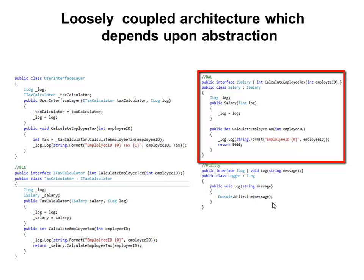The Salary class implements the interface iSalary. Since the Salary class has a dependency on the Logger class, we created a constructor which takes in a logger as a dependency. The constructor takes in a logger and initializes the internal variable of type iLog. When CalculateEmployeeTax is called on the Salary class, it uses this dependency to log the information. The Salary class goes to the database and retrieves the information — in this example, a hardcoded value is returned directly.